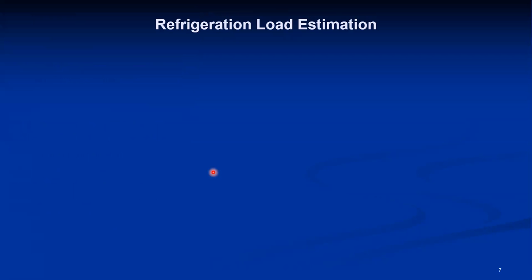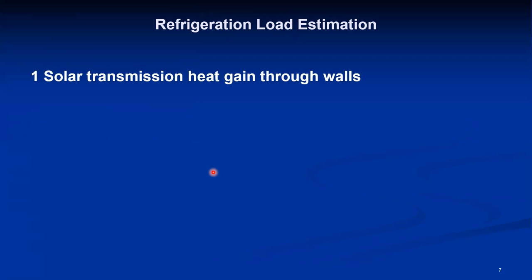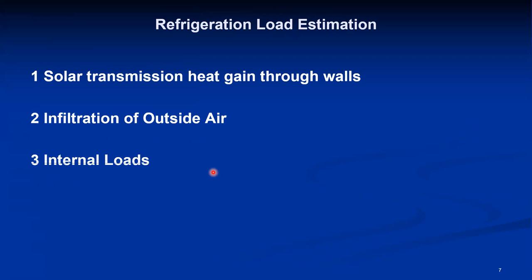The total load on the cold storage can be identified as four types: solar transmission heat gain through the walls, infiltration of outside air, internal loads, and product loads. These are the four types of refrigeration load associated with cold storage.